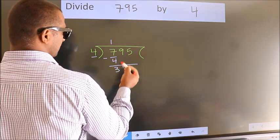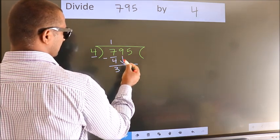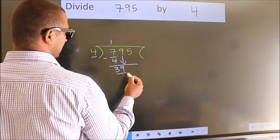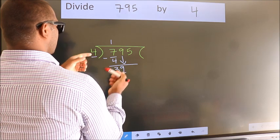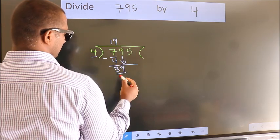After this, bring down the beside number. So, 9 down. So, 39. A number close to 39 in 4 table is 4 nines 36.